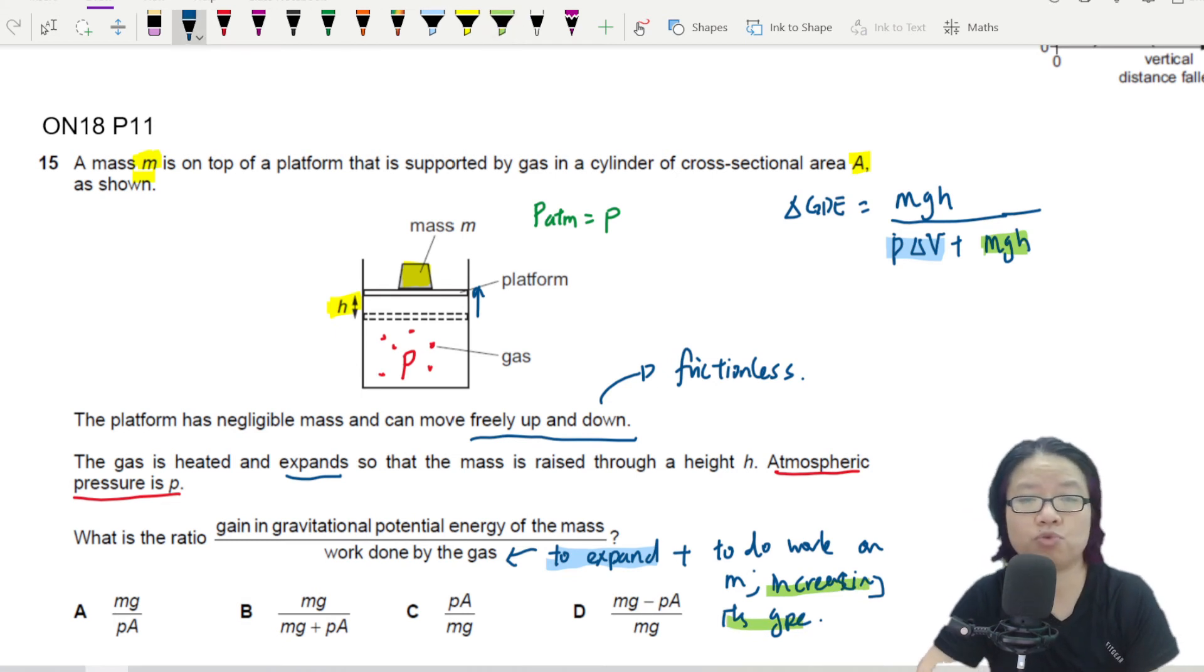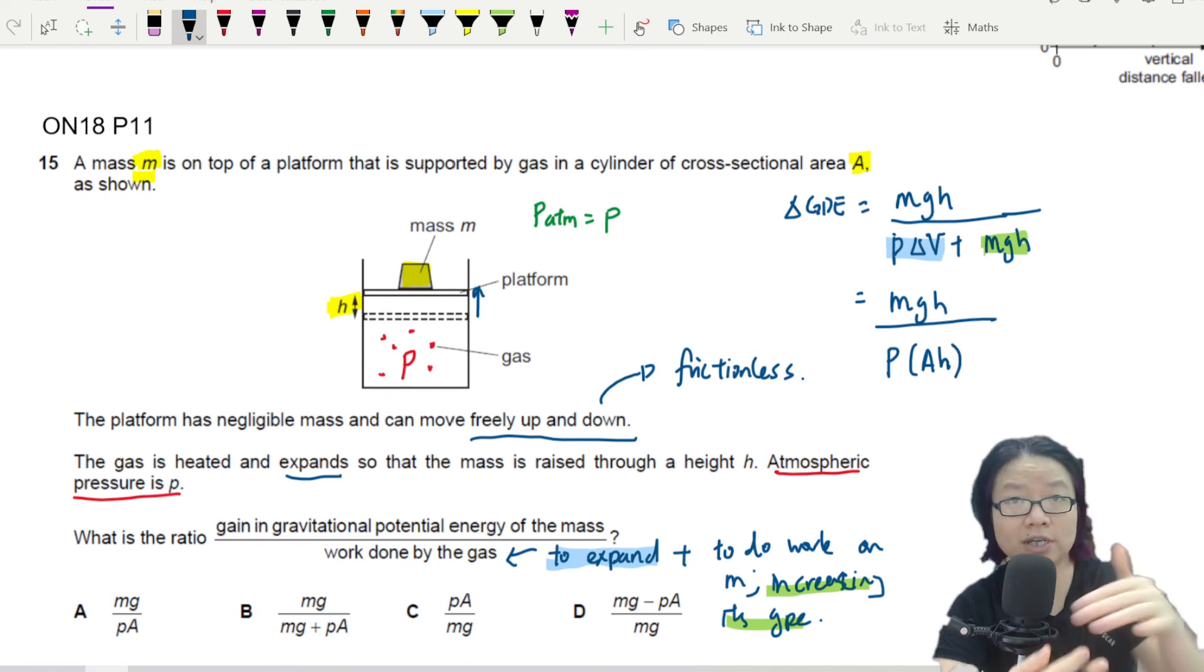So we're going to substitute delta V. Because I know that pressure is P, but delta V here is the cross-sectional area A times the height h. That is how much the gas has expanded.